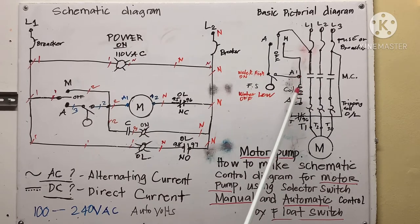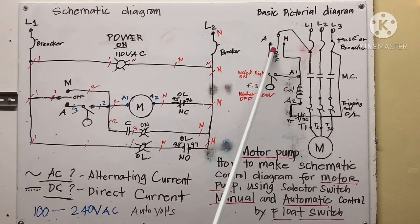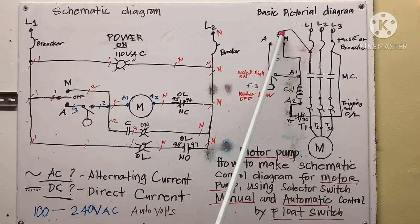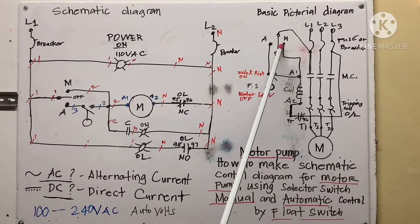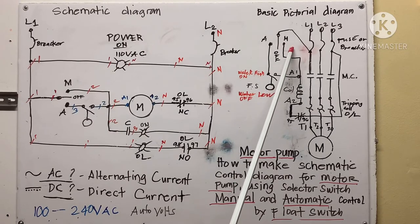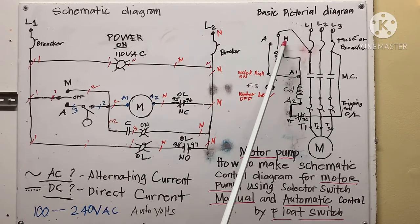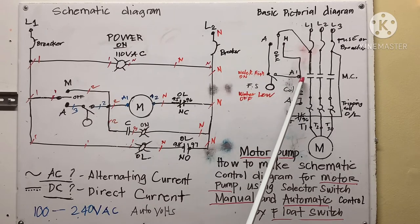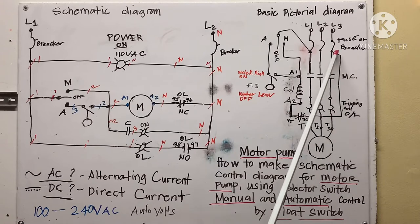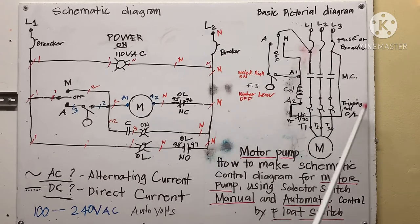A1 and A2 — we got to supply this one. This is the selector switch. This is manual here. When you move the switch to manual mode, this switch energizes this coil because the power circuit is going through over there, so the motor is energized.